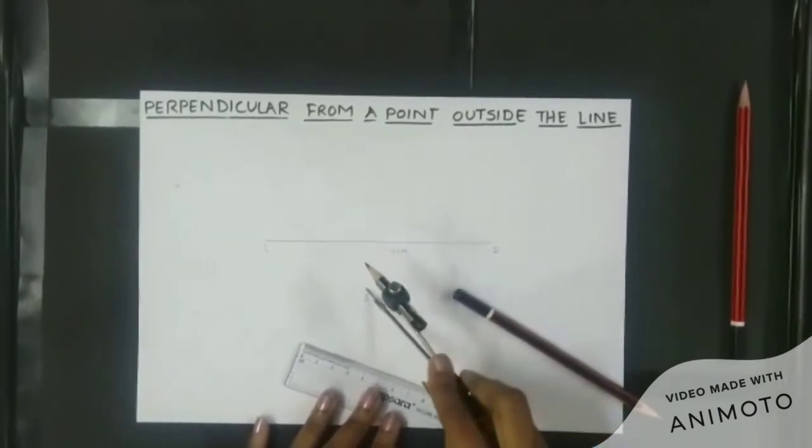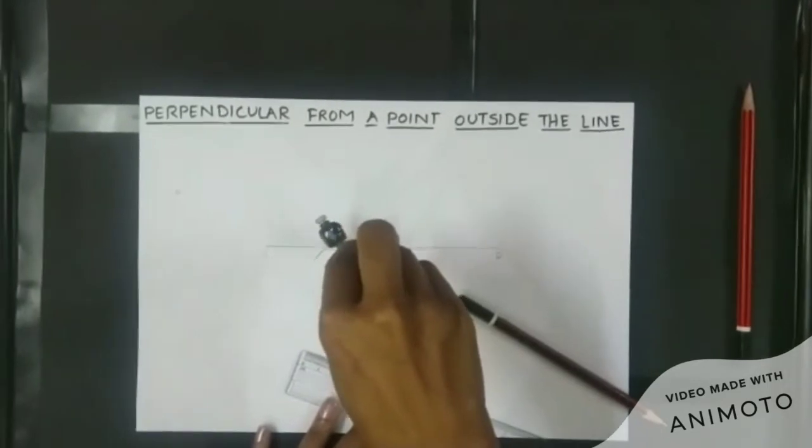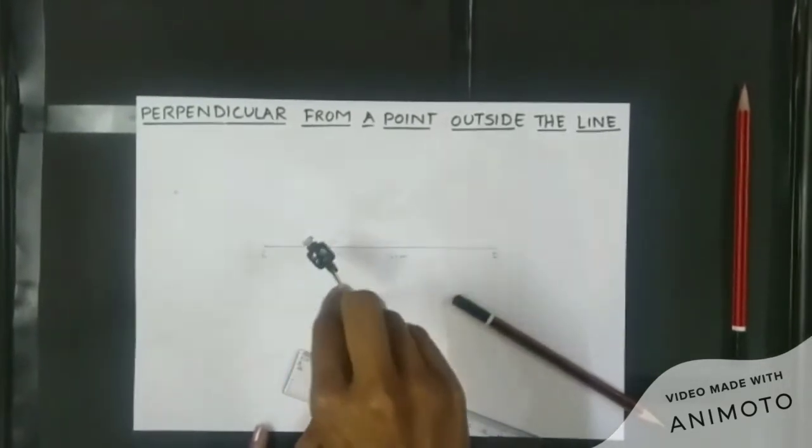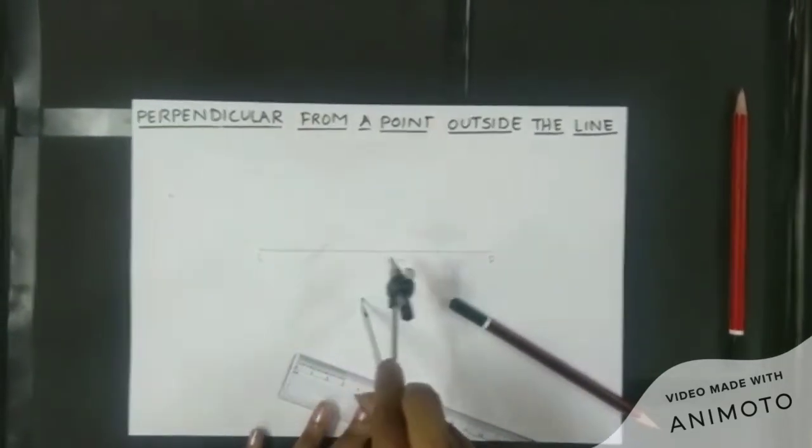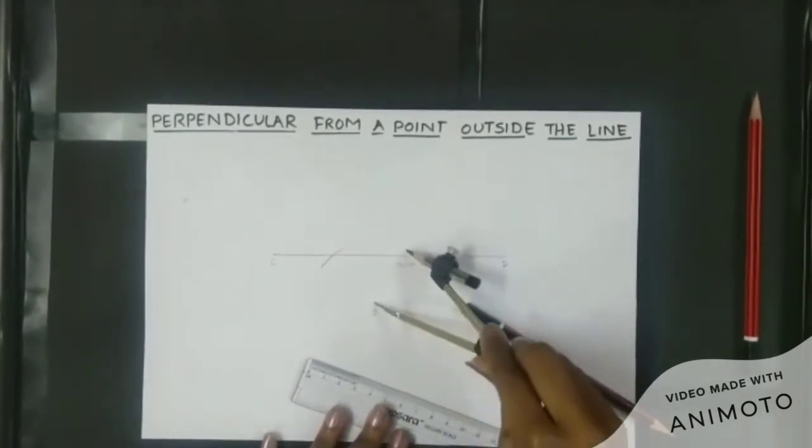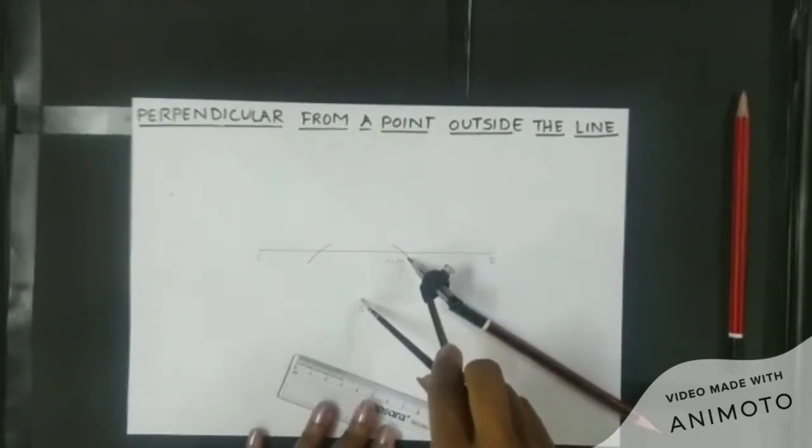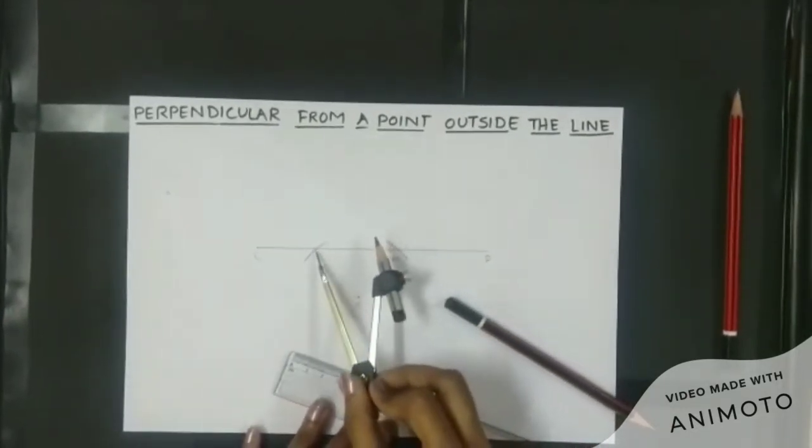Make an arc which is intersecting my line segment CD. On the other side also I have to do the same process and make another arc. After these two arcs are done intersecting the line segment CD...